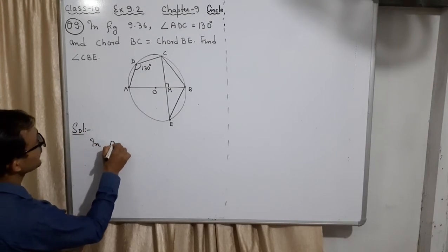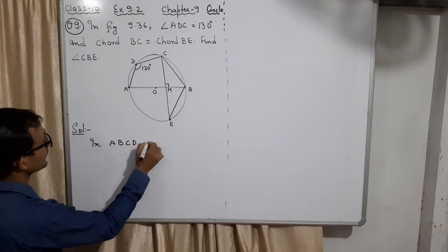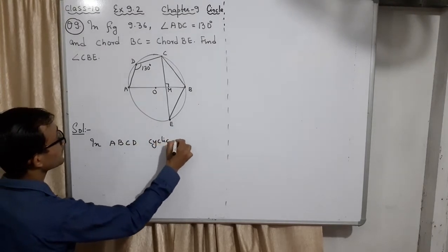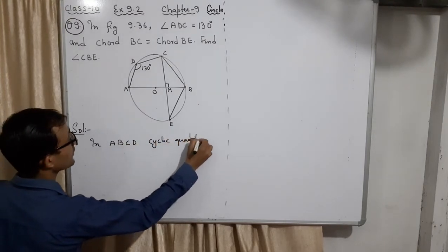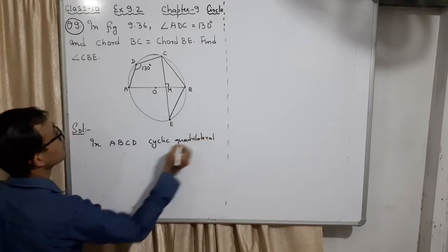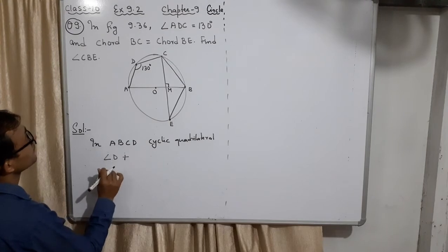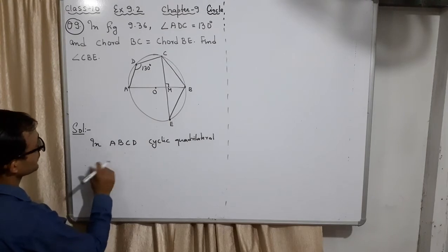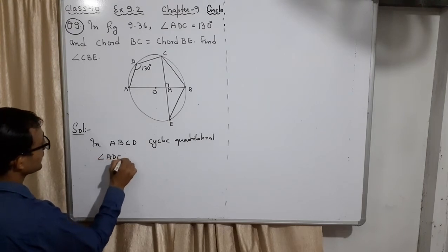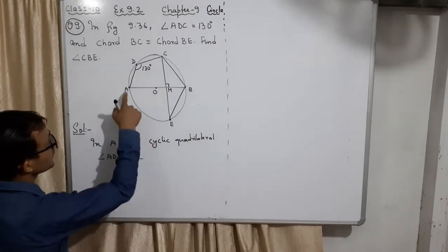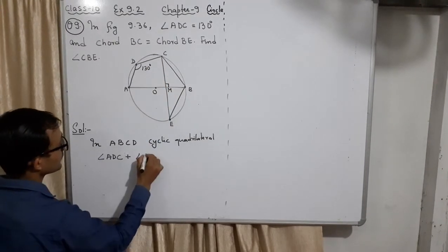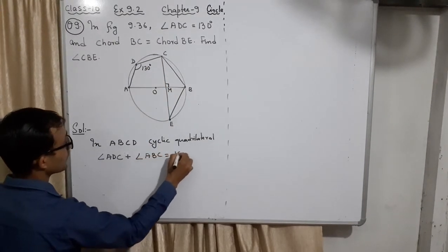In ABCD, cyclic quadrilateral. Angle ADC plus angle ABC equal to 180 degrees.